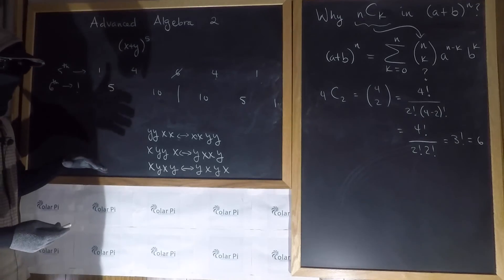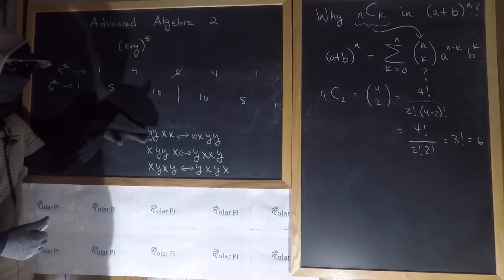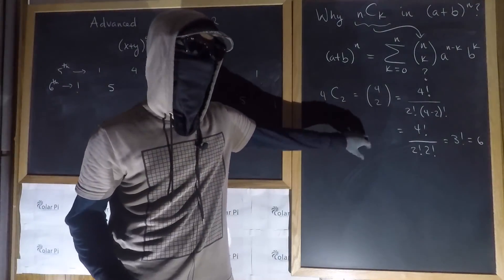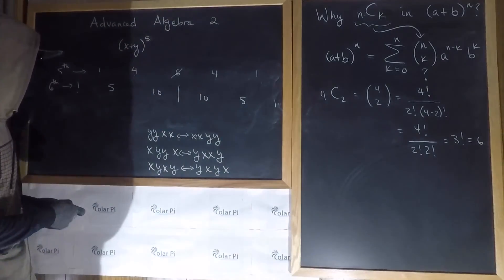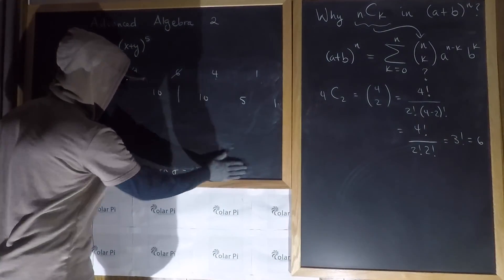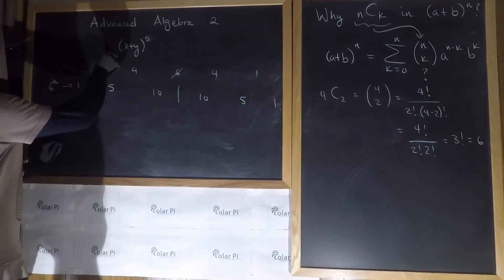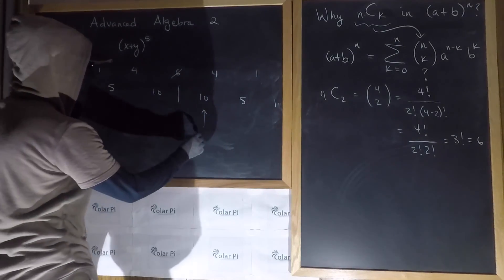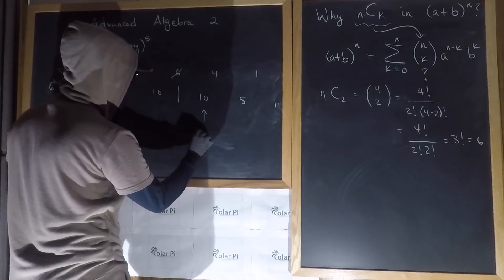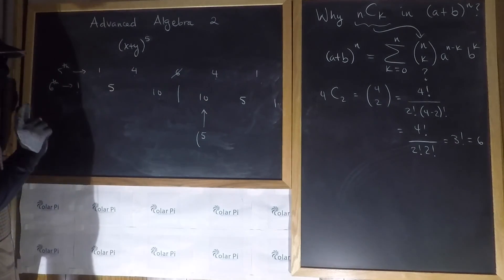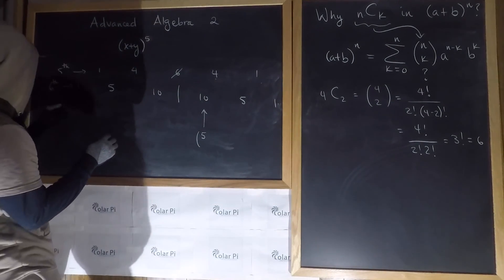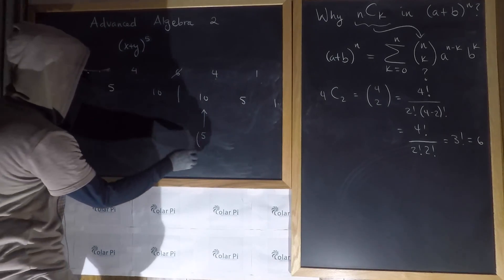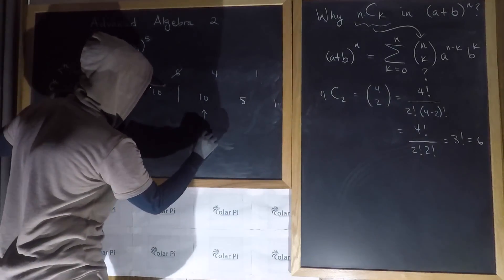This symmetry is explained by this: for x plus y to the fifth, when we get to the middle term, what we're doing is 5 choose 3 — we're choosing y's. The terms would be 5 choose 0, 5 choose 1, 5 choose 2, and so we're doing 5 choose 3 here for that middle region.